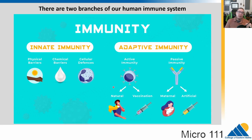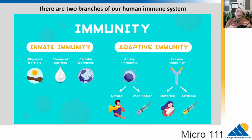That memory is critical — the next time you encounter the pathogen, your adaptive system attacks it much faster. That's why we give booster doses of vaccines: to prime the immune system so it's ready when you encounter the real pathogen. There is also passive immunity: babies receive antibodies through breastfeeding or in the womb from the mother. There are also artificial means like monoclonal antibody therapy — taking antibodies from healthy individuals and injecting them into people who are sick.